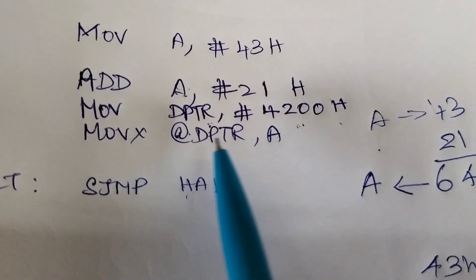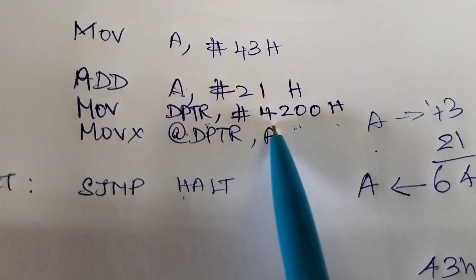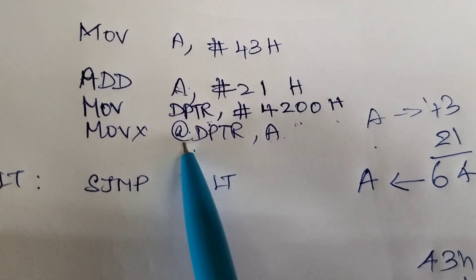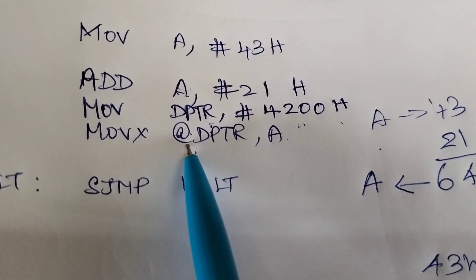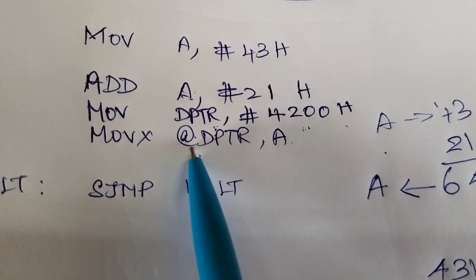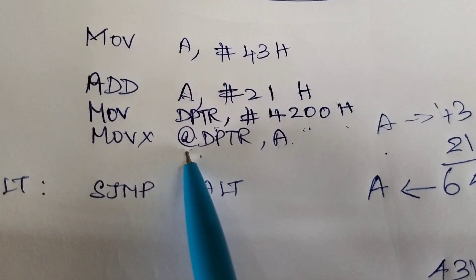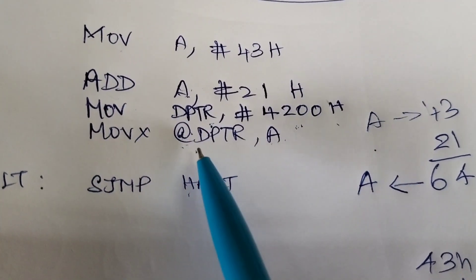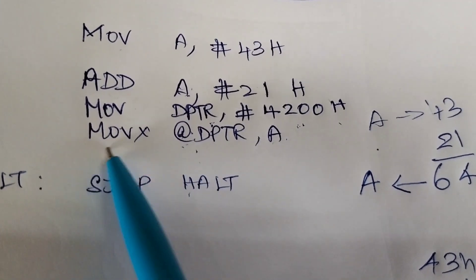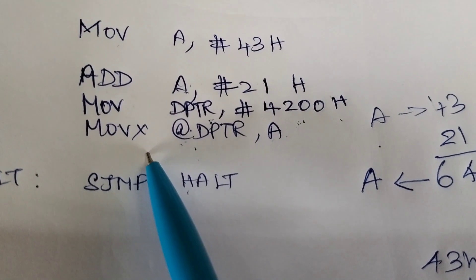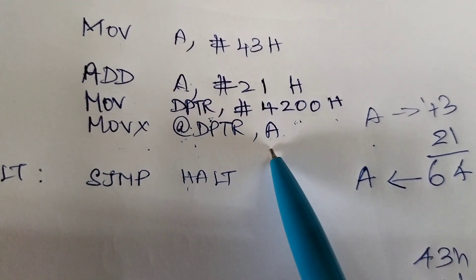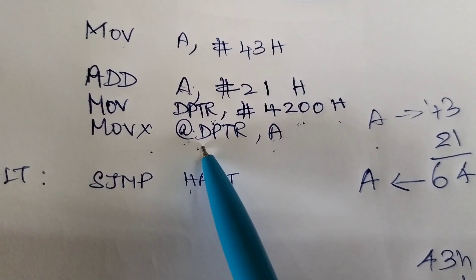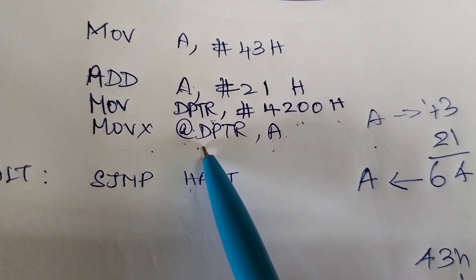And then now whatever the value available in the accumulator, that data we are going to move to this address location. So whenever it is addressed indirectly, we are addressing, then we have to use @. And so far we have used MOV, but here it is external memory. So we are going to use MOVX command since it is external memory. So the value A is loaded into the external memory which is pointed out by DPTR.